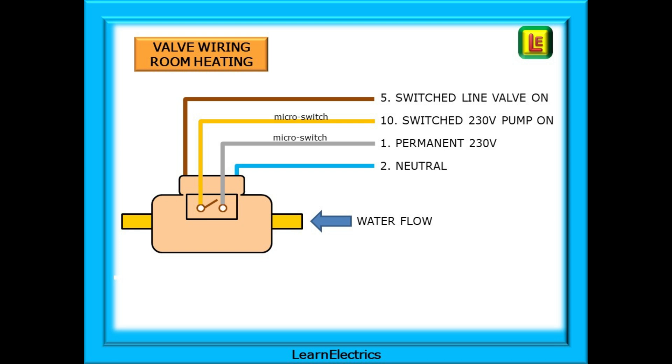Notice that there are two 230 volt supplies to the valve. There is a switched line to turn the valve on and this is only at 230 volts when the thermostat is closed and outputting a voltage. The grey wire is a permanent 230 volts and goes to the microswitch to turn the pump motor on.